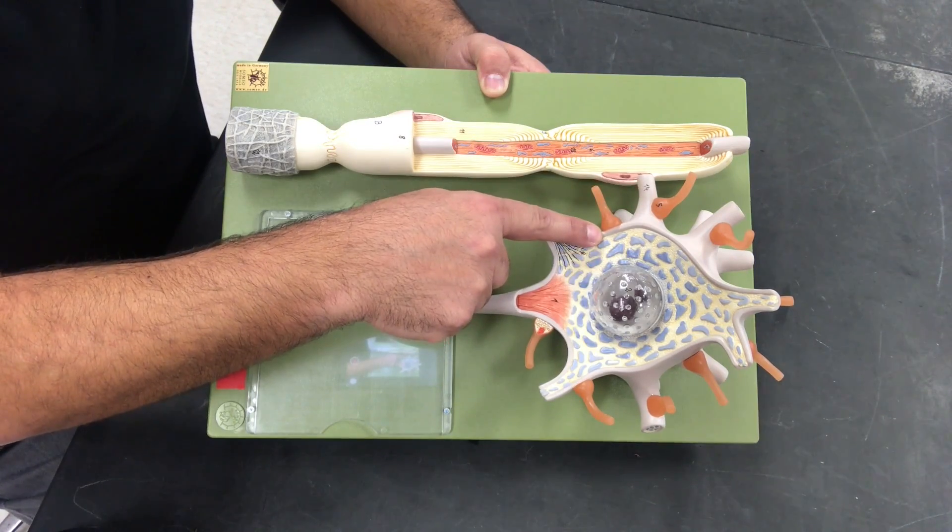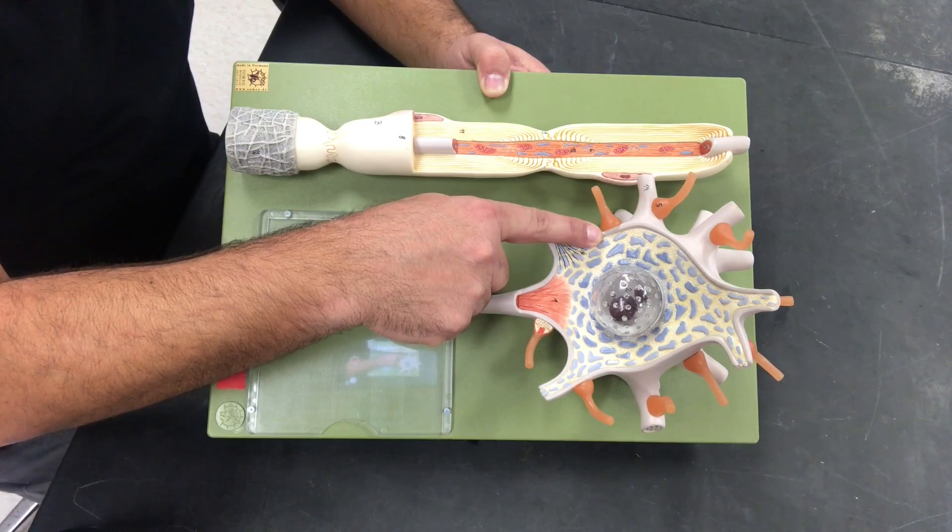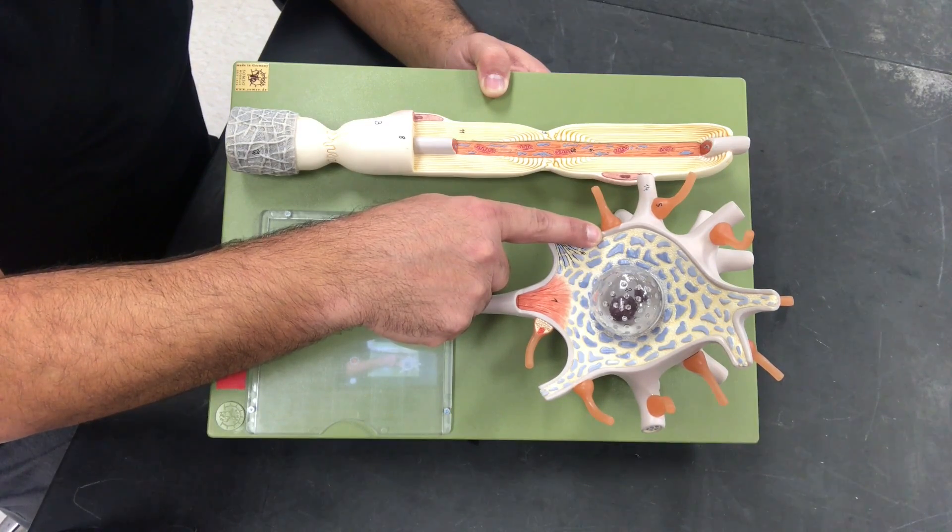We can also put that synaptic end bulb on the actual soma, so this would be axosomatic.